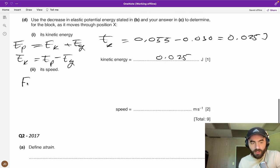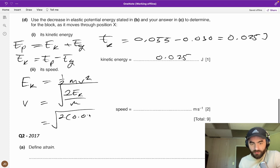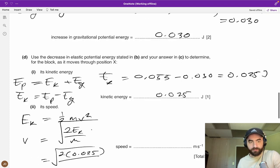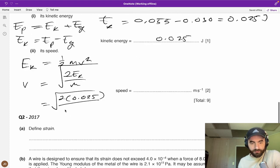If you want to find the speed, well EK equals half mv squared. Rearranging for v, v equals the square root of 2EK over m, which equals the square root of 2 times 0.025 divided by 0.122, which equals 0.64 meters per second.